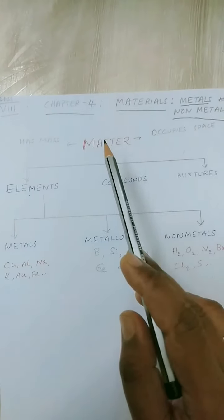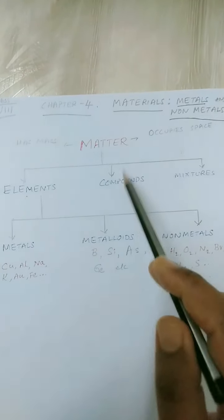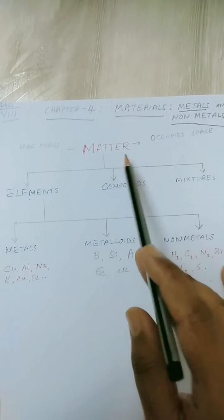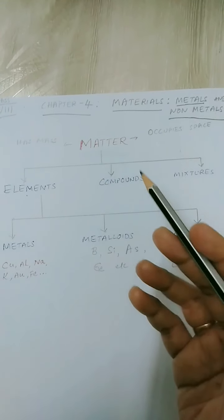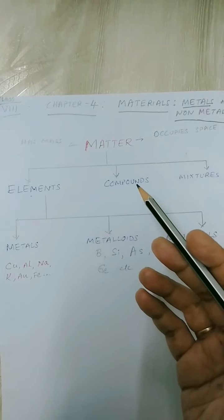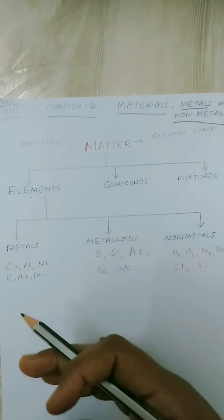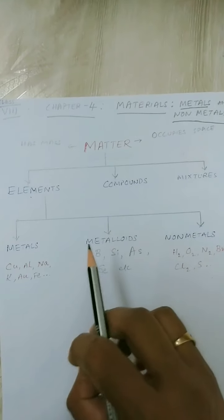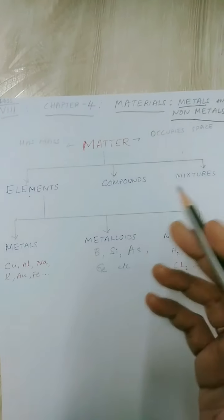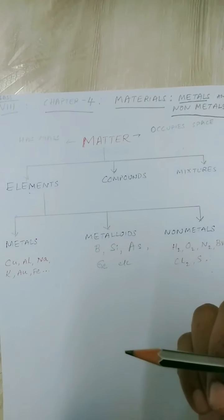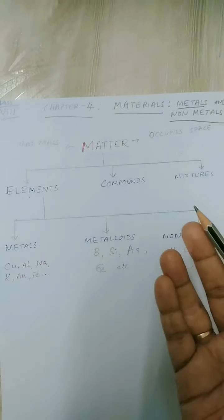Now, what is matter made up of? Matter is composed of the simplest particle, that is atoms. Atoms are the building blocks of matter — they are the smallest particles of matter which cannot be divided further by any physical means. They are the basic units from which molecules are made.